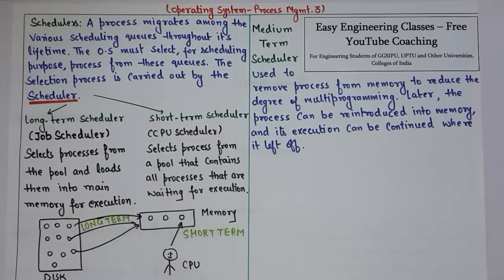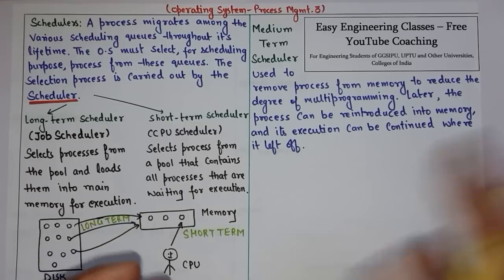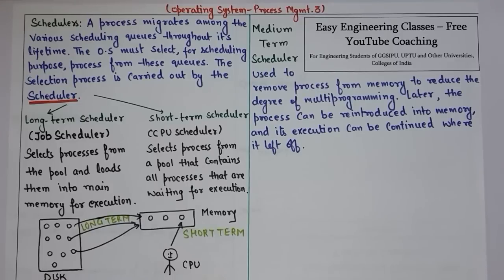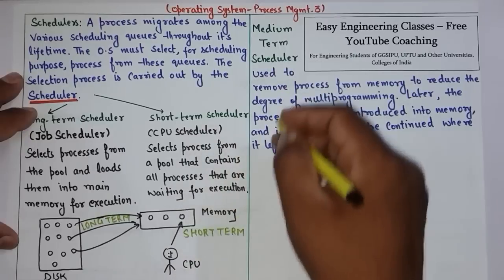We also have the medium-term scheduler. It is used to remove a process from memory in order to reduce the degree of multiprogramming. Later, the process that was removed can be reintroduced into memory and its execution can be continued from the position where it left off. We can select some processes and swap them out from memory, and after some time reintroduce them in the same state from which they were taken out.